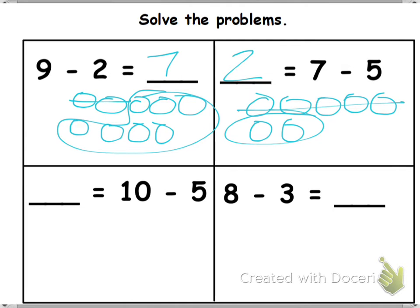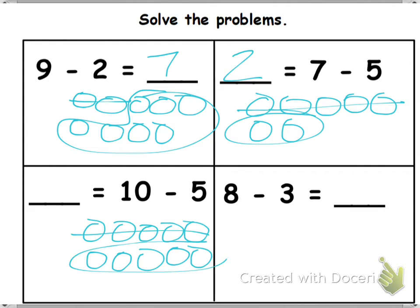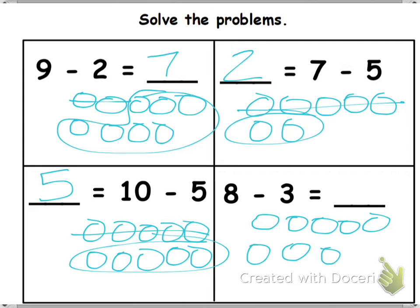Blank equals 10 minus 5. 10 is the whole. Take away how many? 5. Circle the rest. 5. 8 minus 3 equals blank. What is the whole? 8. How many do we take away? 3. Circle the rest. How many is left? 5.